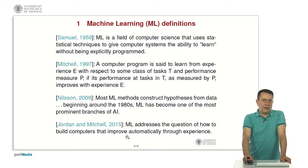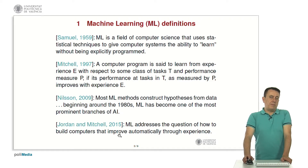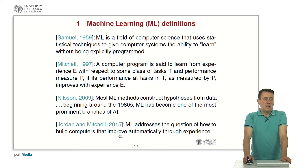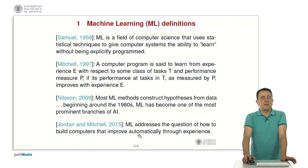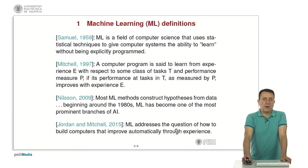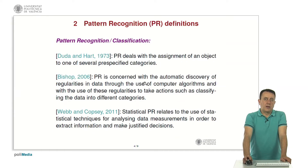The final definition is by Michael Jordan and Tom Mitchell, drawn from a very recent article in Science. It is very compact and gives the essence of machine learning: machine learning addresses the question of how to build computers that improve automatically through experience.